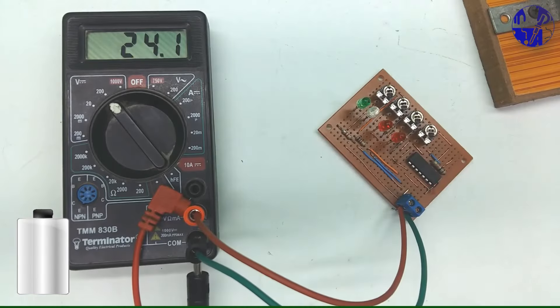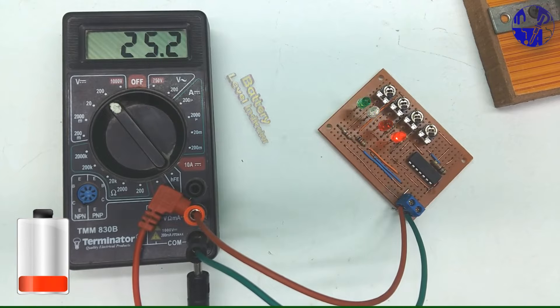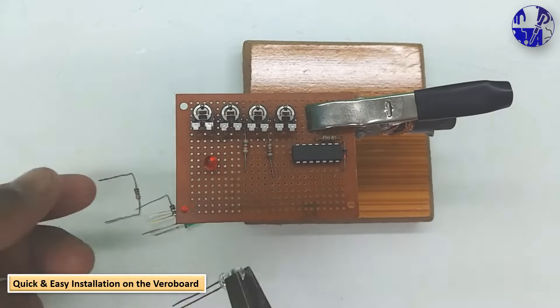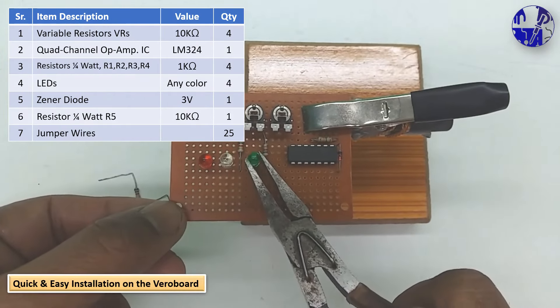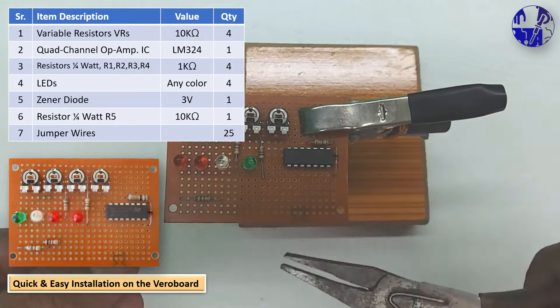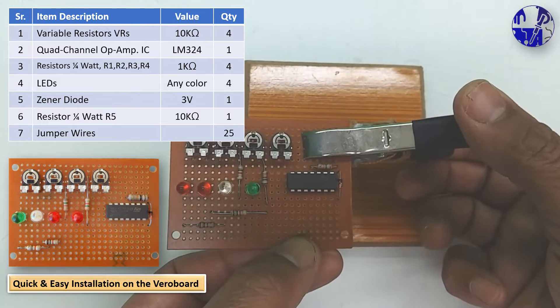In this video, I am going to build a battery level indicator circuit. As visual indicators for different voltage levels, we will utilize four LEDs. This project will be assembled on the vero board. All components used in this project are readily available and cost-effective in the market.